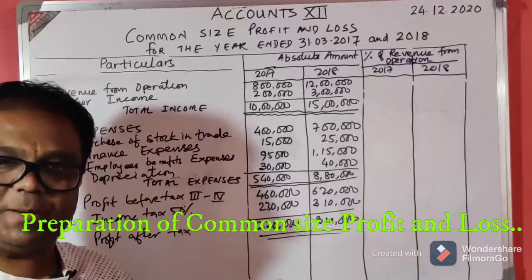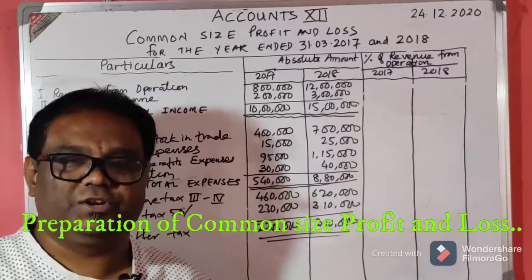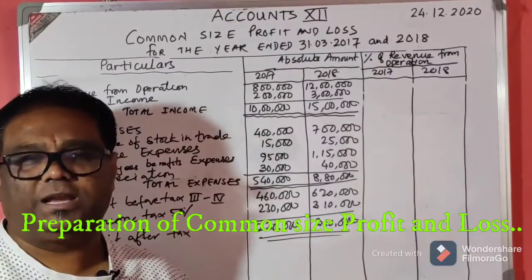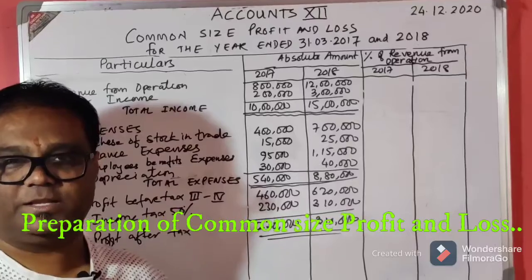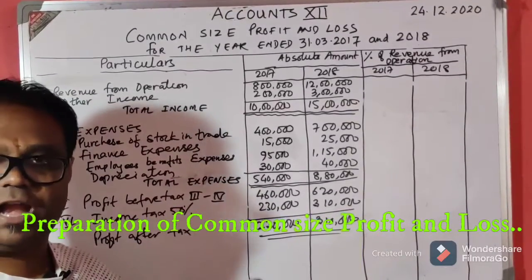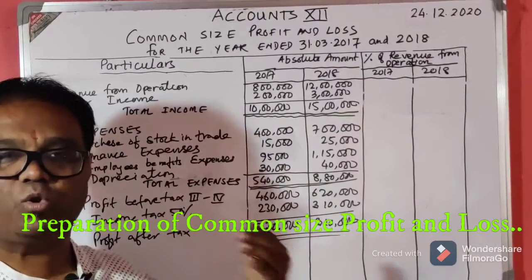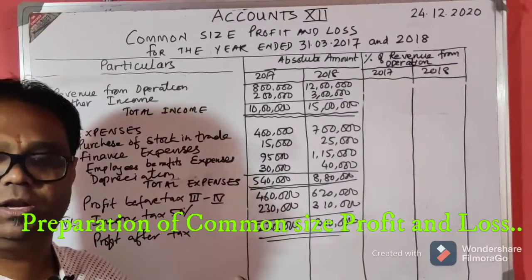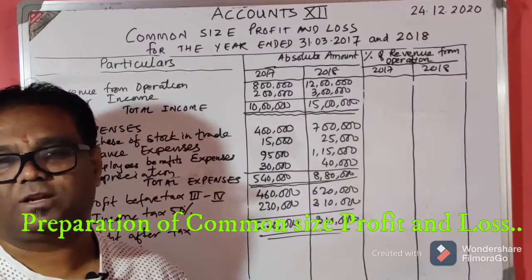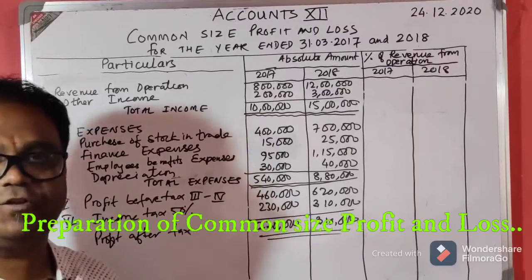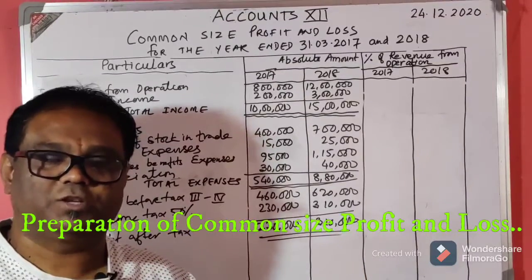Next we find total expenses — depreciation, amortization, employee benefit expenses, financial expenses like interest paid, bad debt, salaries paid to employees. All these are added to get total expenses. Total income minus total expenses gives profit before tax. If you subtract income tax, you arrive at net profit after tax.